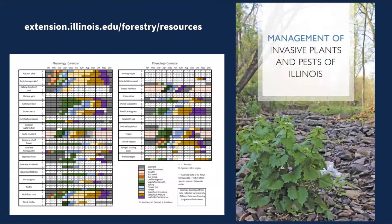Since we're on the topic of resources, we published a couple years ago the 'Management of Invasive Plants and Pests of Illinois' in partnership with the Morton Arboretum. This covers 42 different invasive species found in Illinois as well as some forest pests and insects, with control information, management information, and a phenology calendar built from citizen scientist data collected across Illinois. The phenology calendar shows the development and timing of those plants and how they differ depending on whether you're in northern, central, or southern Illinois.